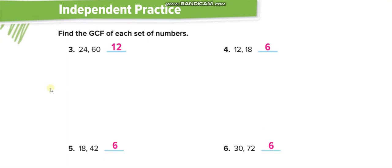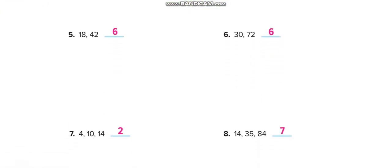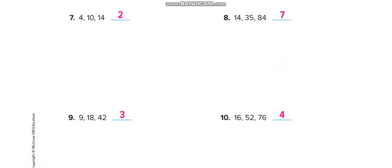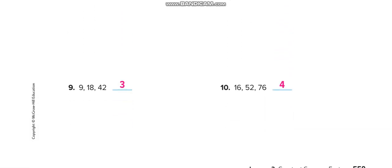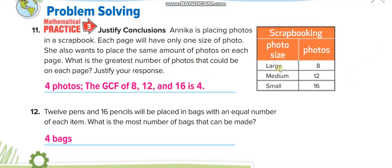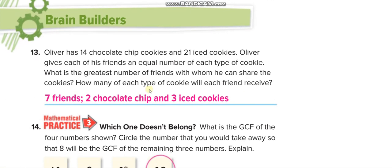You can use prime factorization or factor pairs and then match your answers from this video. On the next page, they find the greatest common factor of 8 and 12, which is 4; for 12 and 16, it is 4; and for 14 and 21, it is 7.